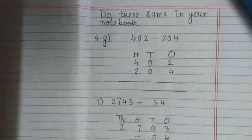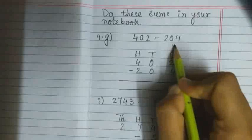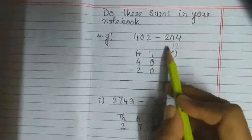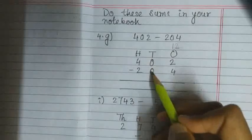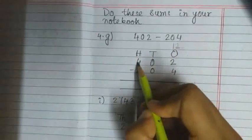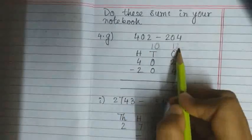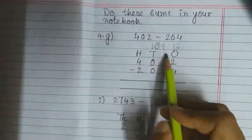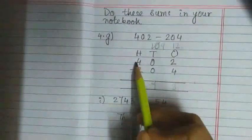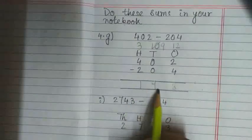In the 1's place we have 2 and here 4. Since 2 is less than 4, we have to borrow 1 from the 10's place, so 2 becomes 12. Now 12 minus 4 is 8. In the 10's place we have 0 minus 0, but since we borrowed, we borrow again from the 100's place, making 0 become 10, then 9 after giving 1. So 9 minus 0 is 9. As we borrowed from the 100's place, 4 becomes 3. Now 3 minus 2 is 1. So the answer is 198.